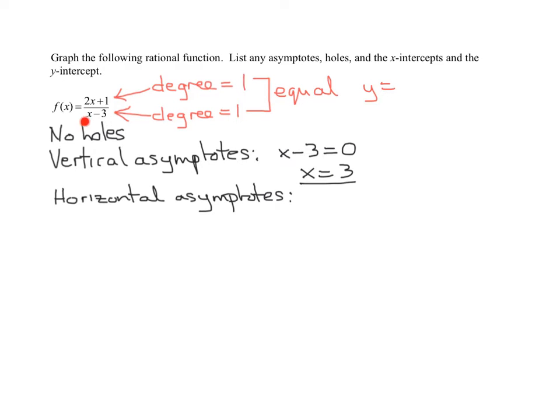What's the leading coefficient in the denominator? What number's in front of this x? A 1. So it's y equals 2 over 1, which is y equals 2. So let me write it down here. My horizontal asymptote is y equals 2.